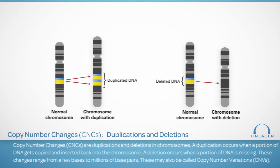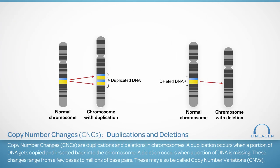Copy number changes, or CNCs, are duplications or deletions within chromosomes. A duplication occurs when a portion of DNA gets copied and is reinserted into the chromosome. A deletion occurs when a portion of DNA is missing. These changes range from a few bases to millions of bases, and may also be called copy number variations, or CNVs.